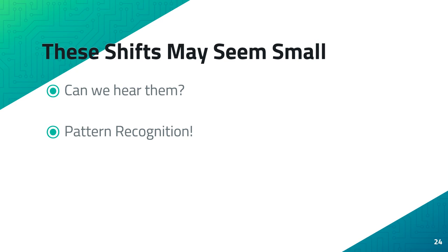In the next installment of this series, I'm going to talk about what goes on between our ears and how our brains can pick up on what we call music — human pattern recognition. Thanks for watching. This has been part three of my cable science series on how humans can in fact hear differences in audio cables, covering AC signal transmission. Please join me next time for part four: human pattern recognition. If you haven't already, please like and subscribe. As always, enjoy the music.